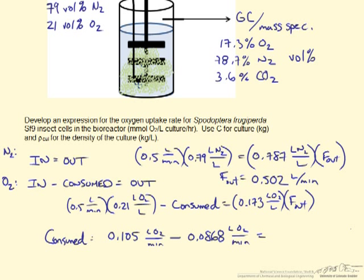So I have rearranged the equation so that consumption is on the left side. So the IN amount of oxygen is 0.105 liters per minute. And we are subtracting out what is coming out, which is 0.0868. This should give us 0.0182 liters of oxygen per minute that is consumed.